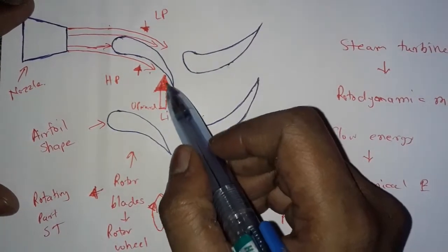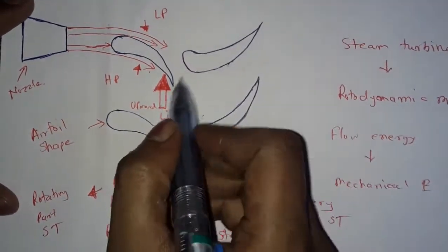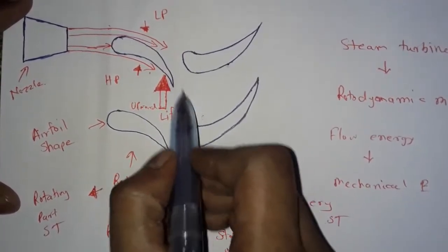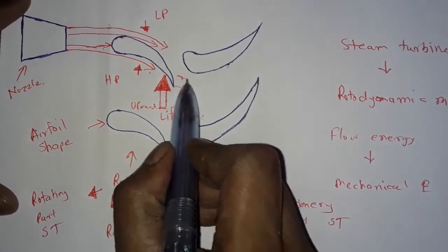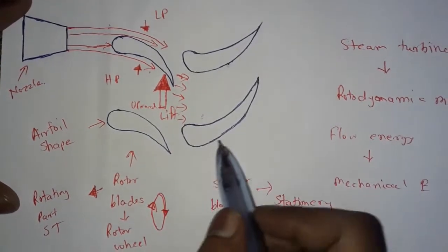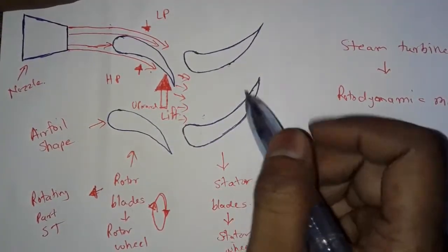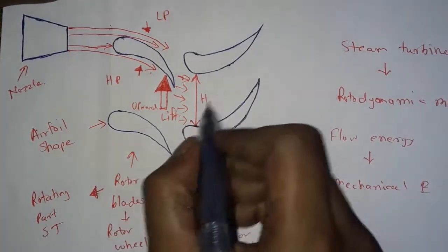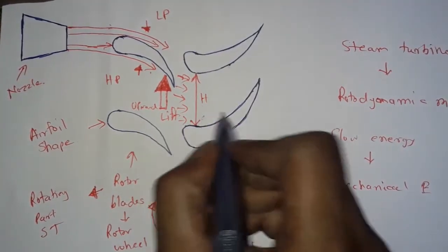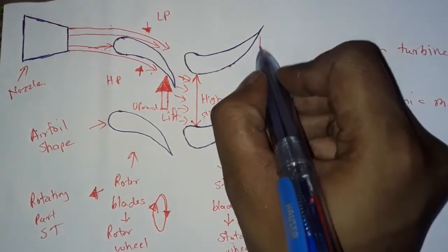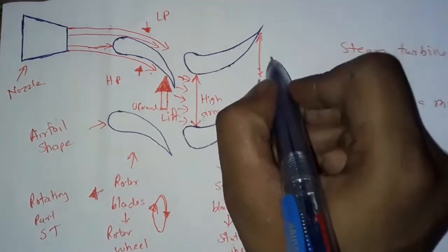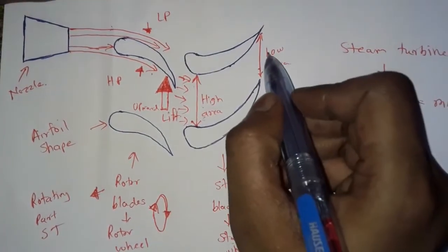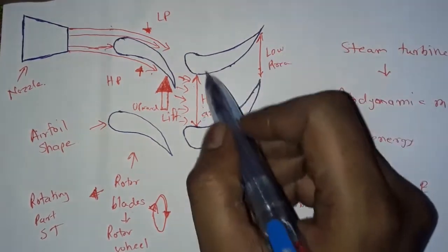Because of this upward lift, the rotor rotates. After that, the steam goes into the stator section. The stator blades are stationary. Here, this area is larger — call it high area — and this area is smaller, which is the low area.